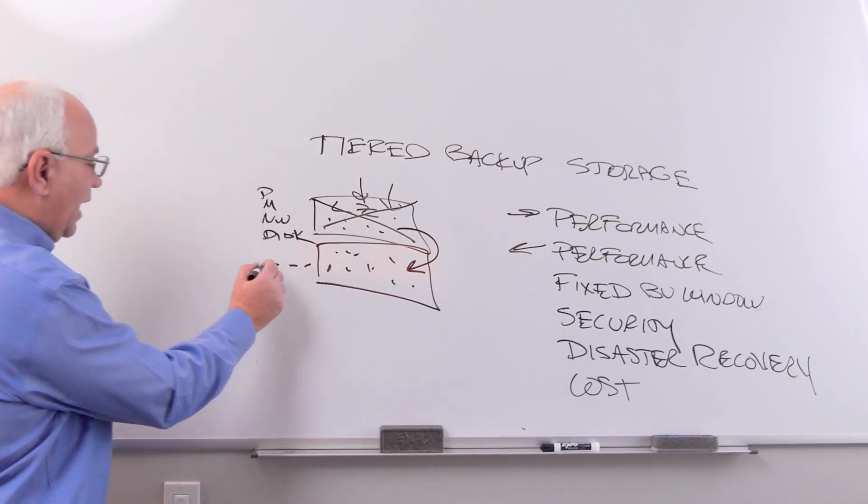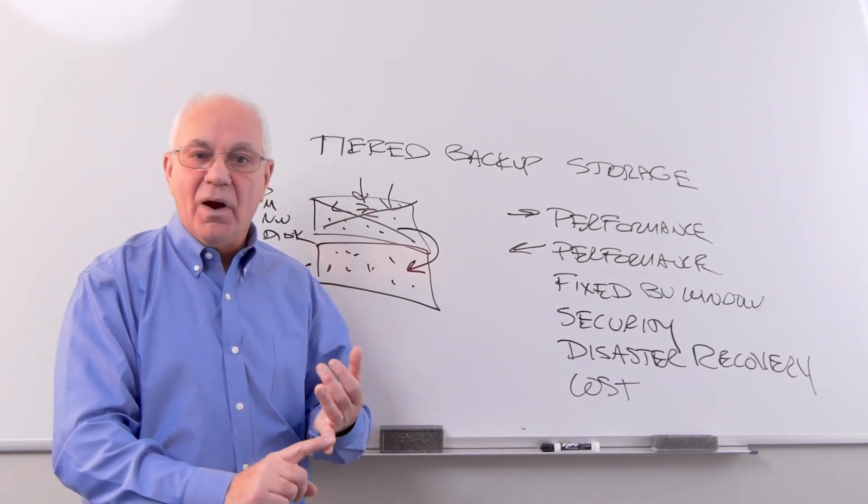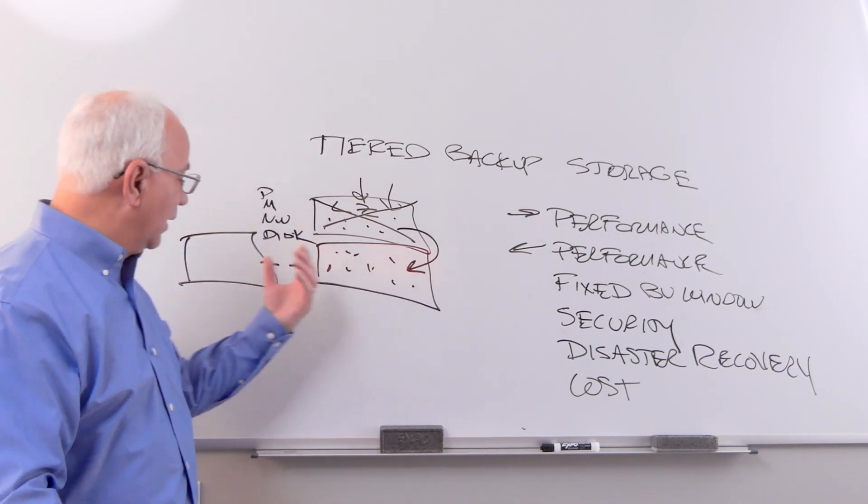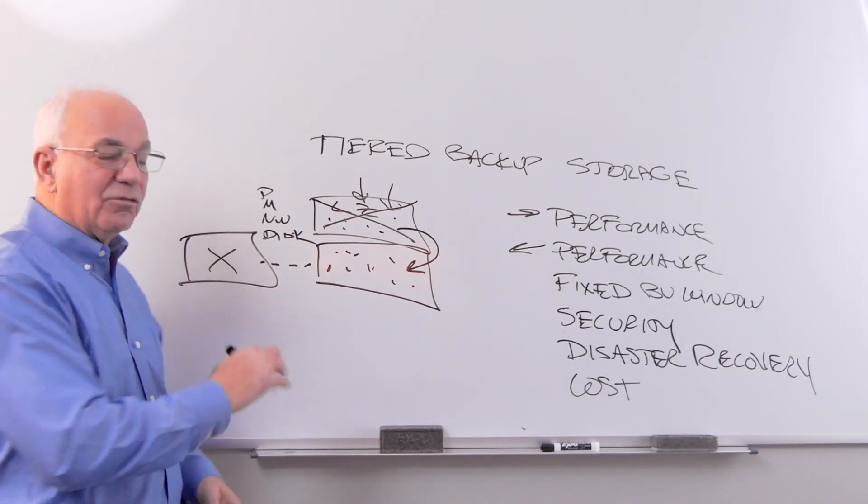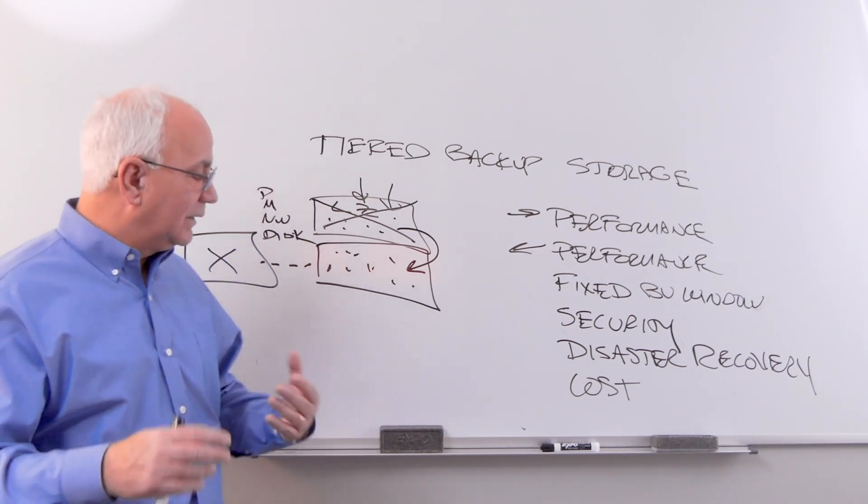For disaster recovery, we can replicate off-site to a third-party data center, to your own data center, even to AWS or Azure and other public clouds, so that you can recover from a disaster such as a fire, a flood, or an earthquake.